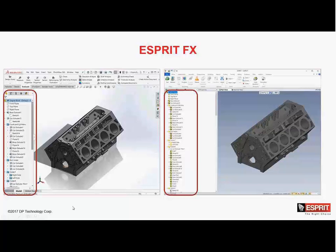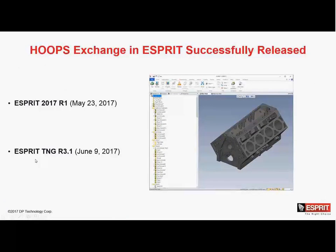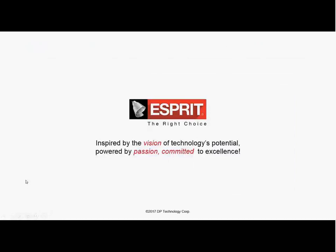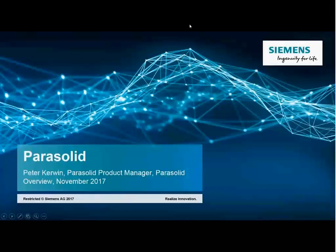This also helped us in automation, where we can automatically do feature recognition and put toolpath without any manual programming. The deployment of Hoops was relatively short — in just a couple of months, we were able to integrate Hoops and deploy in Esprit. Today, Esprit 2017 R1 has been using Hoops since May of this year, and we have another product, Esprit TNG — Esprit the Next Generation — R3.1, since June 9th. That concludes my presentation, and thank you to Siemens and Hoops Exchange.